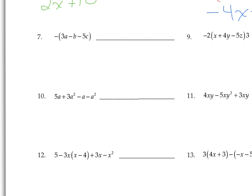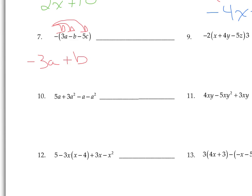On number 7, first look to see if there are any like terms — there aren't. One has A, then B, then C, so these are all unlike terms. I'm just distributing. When you just have a negative sign, it's distributing a negative 1, and the only thing that happens is all the signs change. Negative 1 times 3A is negative 3A. Negative 1 times negative B is positive B. Negative 1 times negative 5C is positive 5C.